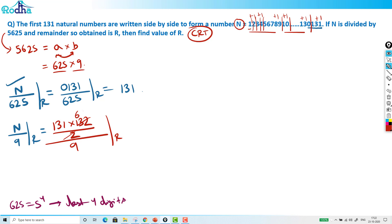So this becomes 66 actually, and it becomes 131 into 66 by 9 remainder, again divide by 9. So this 1 plus 3 plus 1 is 5. 6 plus 6 is 12, 12 by 9 remainder is 3. So 15 by 9 remainder is 6.